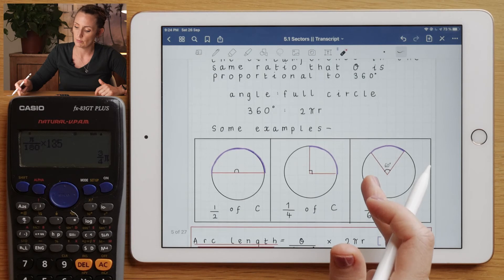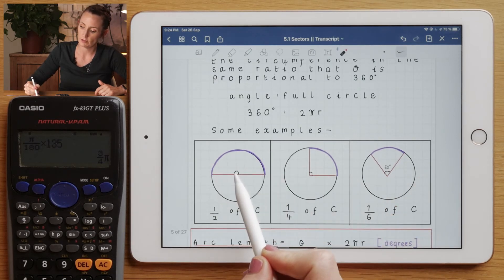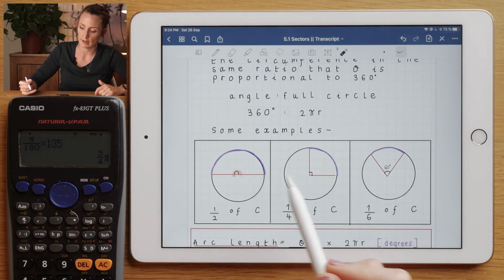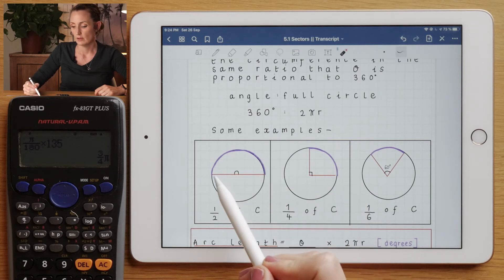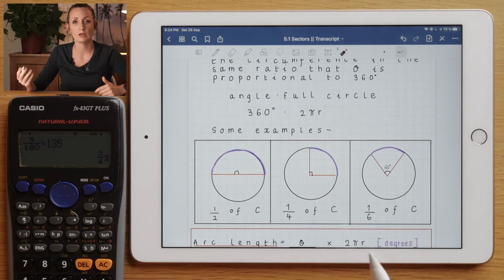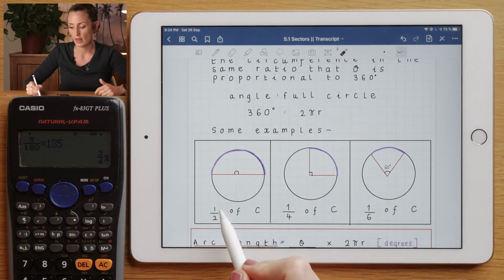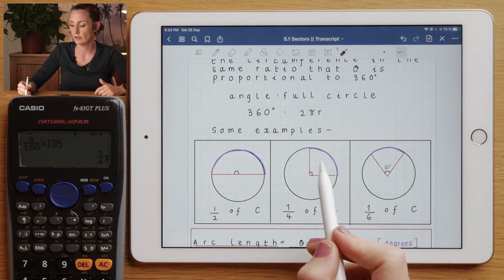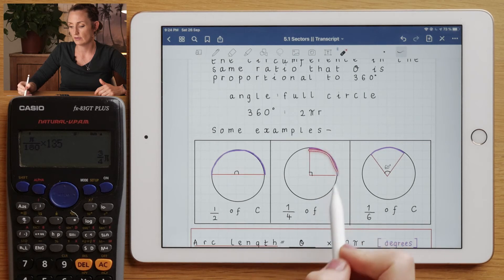In all of these examples, to find the circumference, you can also think about what the angle would be here, often called theta. So if you've got 180° because it's a straight line, out of 360° which would be the full circle, that will cancel down to a half.